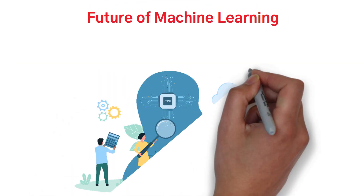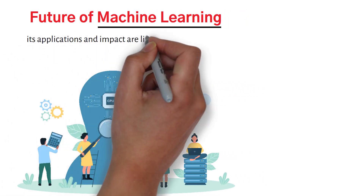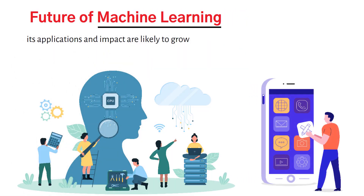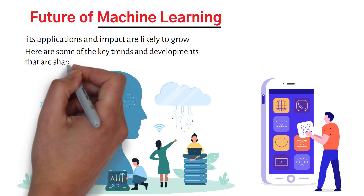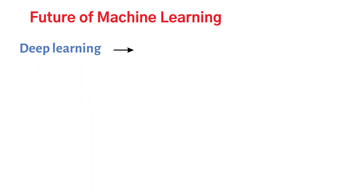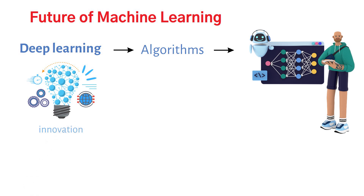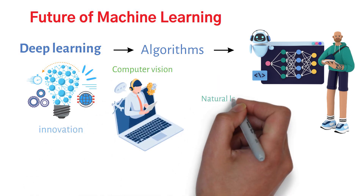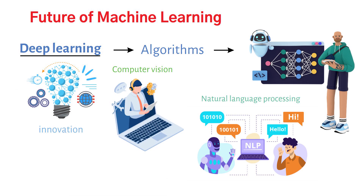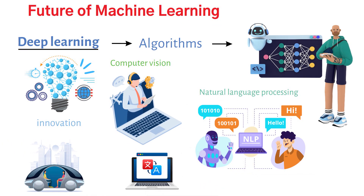Future of machine learning: as machine learning continues to evolve, its applications and impact are likely to grow. Deep learning algorithms, which use neural networks with multiple layers, have revolutionized many fields and are likely to continue driving innovation in areas such as computer vision and natural language processing. Deep learning has already enabled breakthroughs such as self-driving cars and real-time language translation.